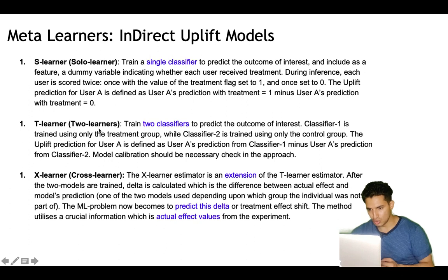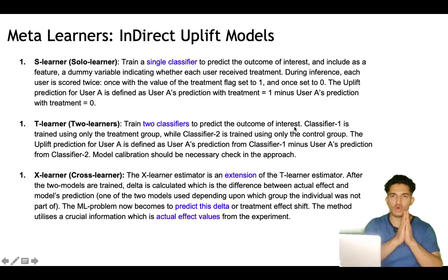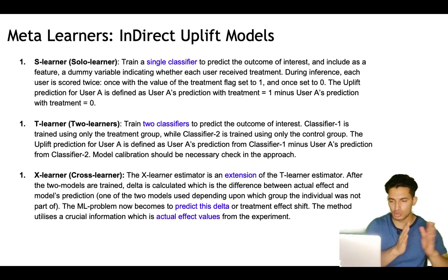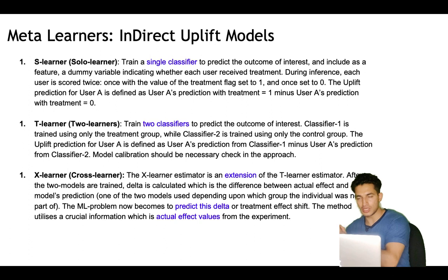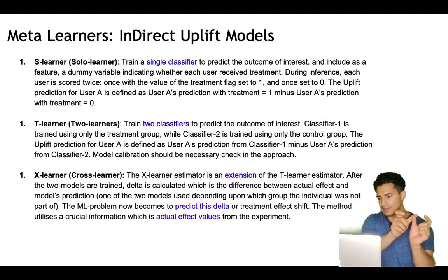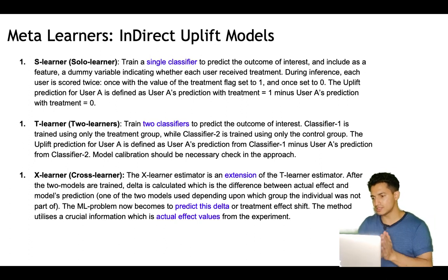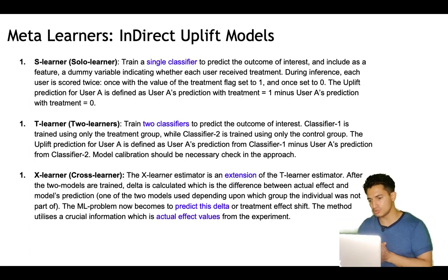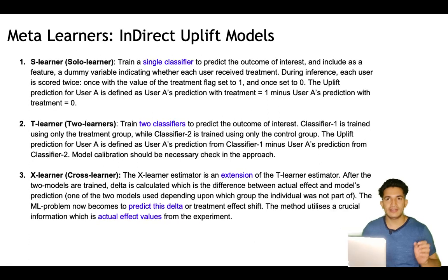The second approach is the T-learner, which uses two learners. Here we train two classifiers to predict the outcome of interest: classifier one is trained only on the treatment group and classifier two is trained only on the control group. The uplift prediction for user A is defined as user A's prediction from classifier one minus user A's prediction from classifier two. Model calibration should be a necessary check in this approach.